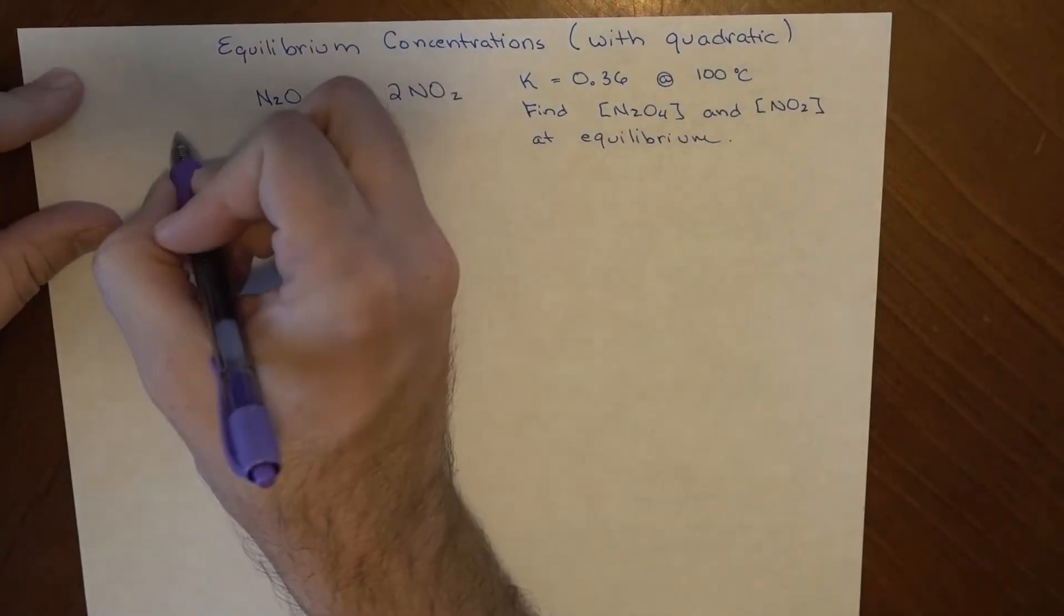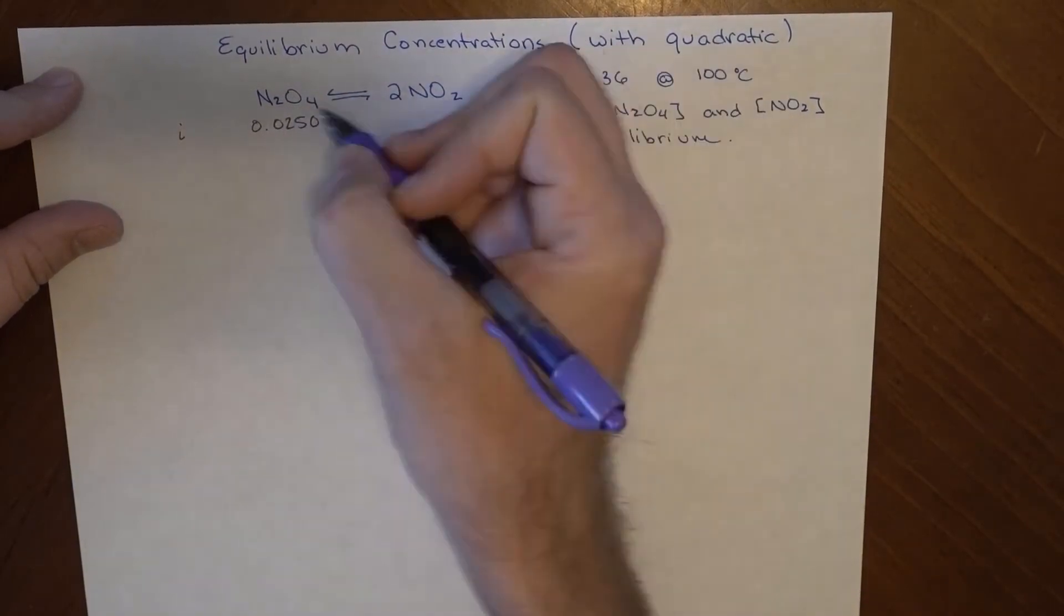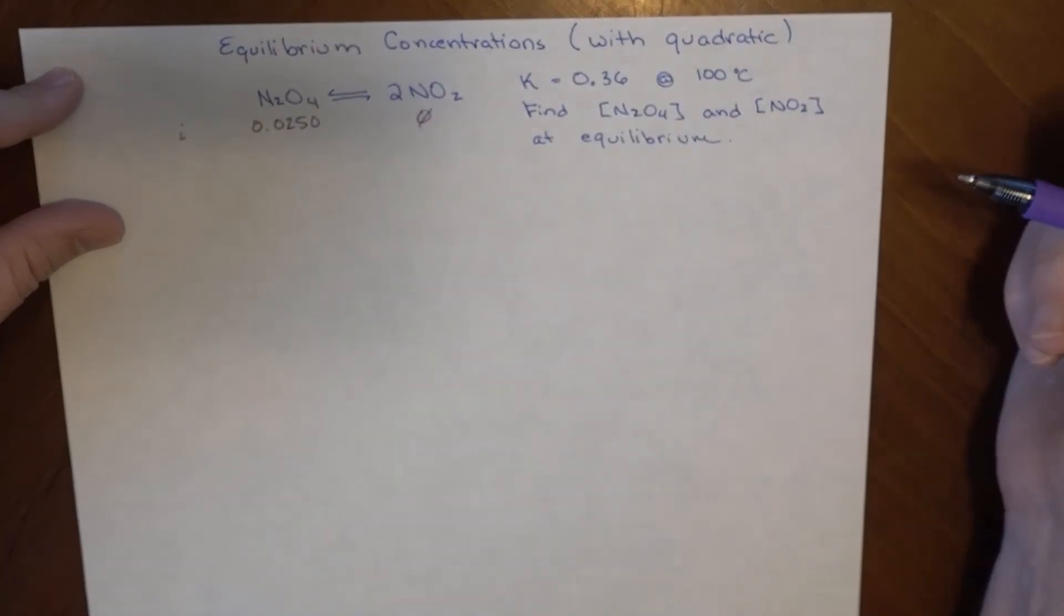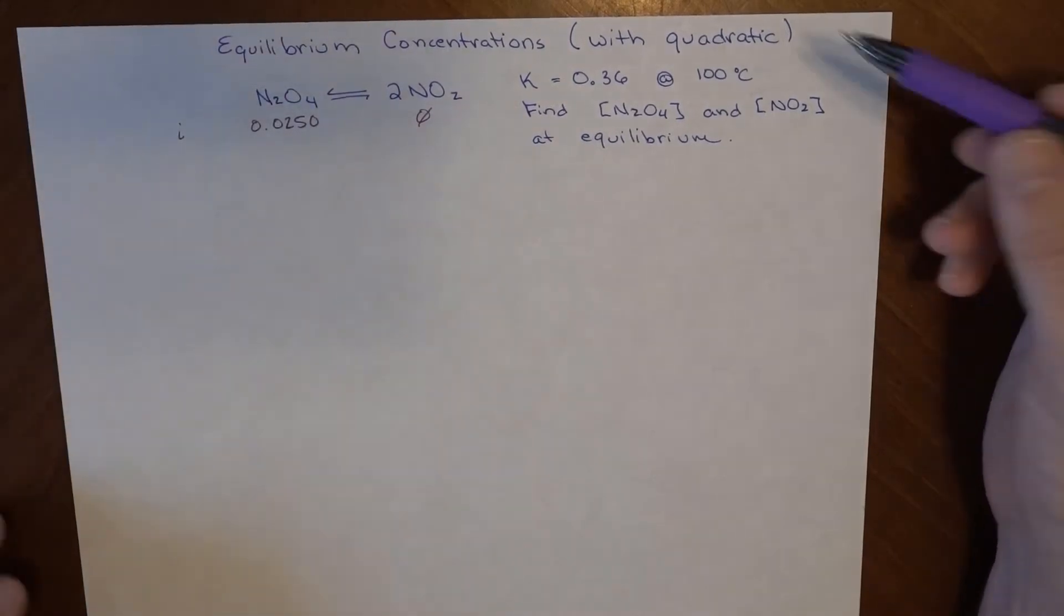Now the only thing we know for this are the initial concentrations. So this initially has 0.0250 molar concentration, and initially the concentration of this is 0. Our job is to try and find what the concentrations for these are at equilibrium.